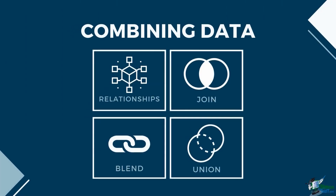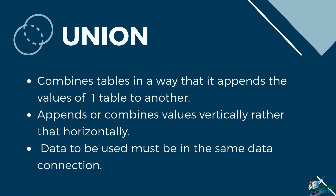Aside from blends, relationships, and joins, there is also another way of combining data from multiple sources. Union combines tables in a way that it appends the values of one table to another. Compared to the other methods, union appends or combines values vertically rather than horizontally. In order to apply a union in a Tableau data source, the tables or sheets used must be in the same data connection.